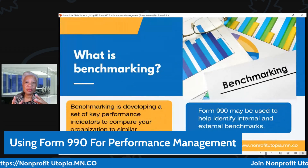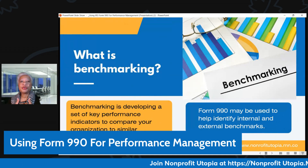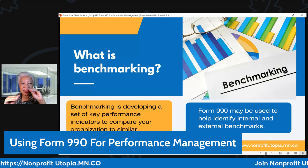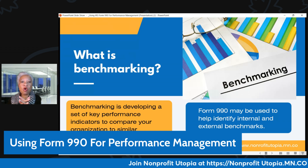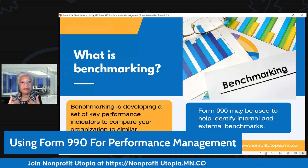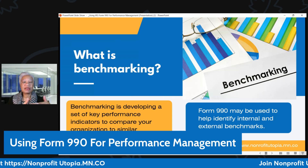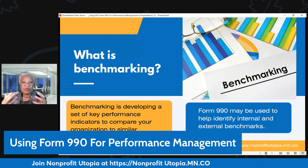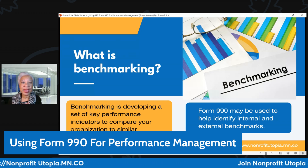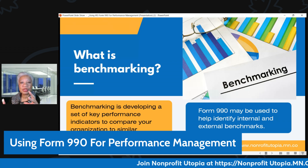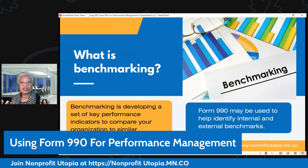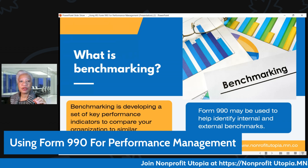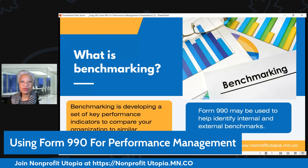When we speak about benchmarking, we're basically looking at comparing yourself. You can either compare your performance to yourselves over time — looking at trend analysis and thinking about what is a good goal or objective based on what we know about ourselves. Or more commonly, you can use that data to compare your organization to like organizations: organizations in the same community, doing the same thing, with similar revenue, etc. This way you're not comparing apples to oranges — if you're a startup, you're not comparing yourself to large institutions, but really looking at your organization compared to organizations that are like yourselves. And you can get that information from Form 990.